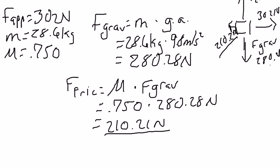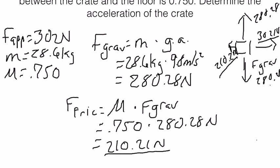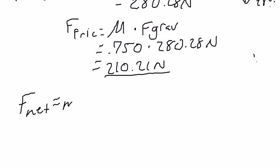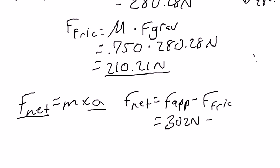Now that we have our friction force and already knew our applied force, we're able to solve for F_net, our net force. Newton's second law says F_net equals mass times acceleration, and we'll need this formula to solve for acceleration. So first we calculate F_net: F_net equals the force applied minus the friction force. Plugging in: 302 newtons minus 210.21 newtons gives us 91.79 newtons.